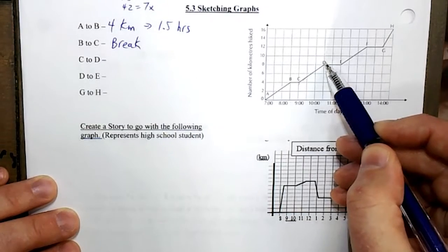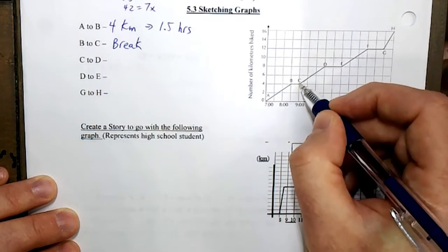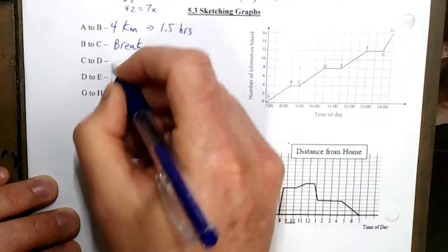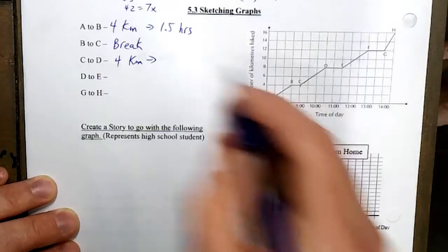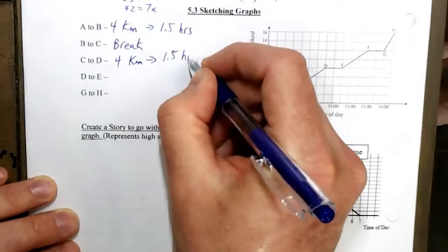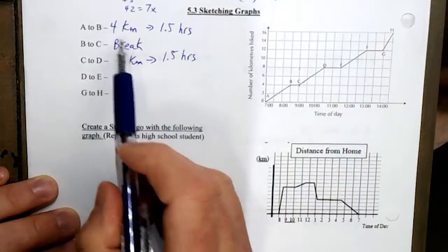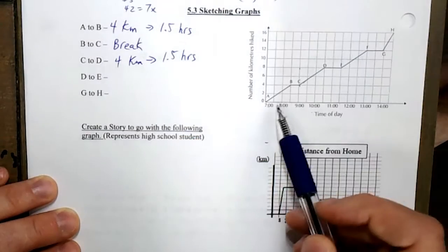Notice that this line is the same steepness as this one, and what we see is that we go from 4 to 8, so we travel 4 kilometers again at 10:30. And so we can see it's the exact same speed - they're going the same distance in the same time.